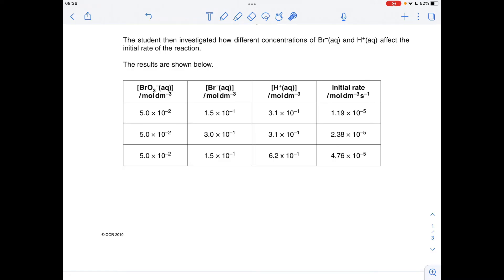So we're looking for a pair of experiments in each case to vary the concentration of one of the reactants and hold the other one constant. You can see if we use these two experiments here, we can get the order with respect to Br minus because H plus ion concentration is constant.